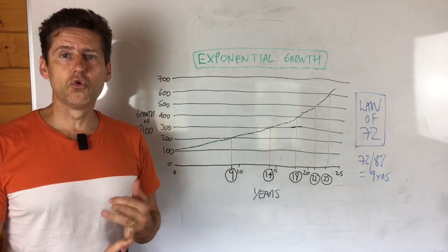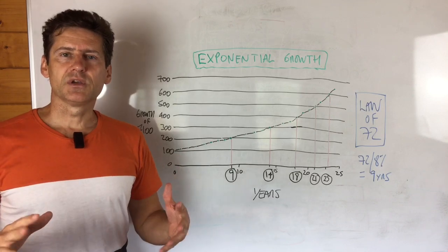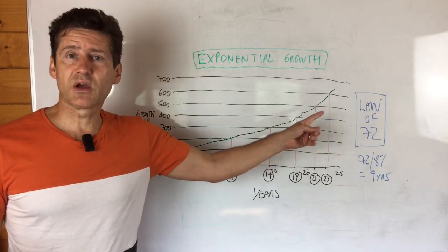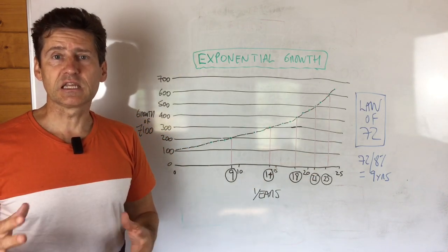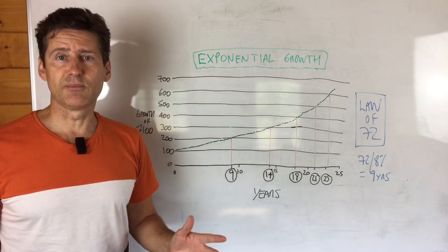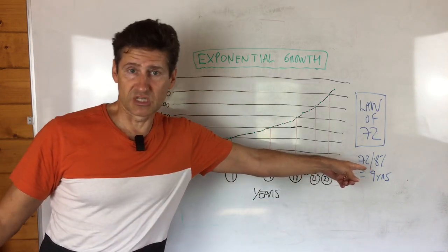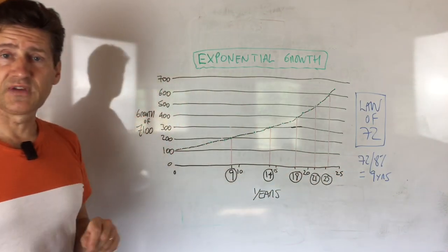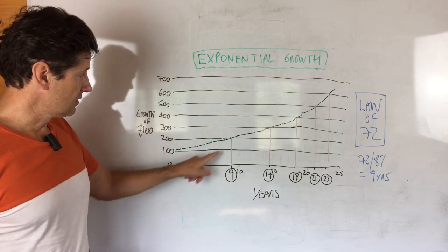The first concept I want to talk about is what's called the Rule of 72. It's a really simple rule of thumb that basically says the number 72 divided by your investment return is roughly the number of years it takes for your initial investment to double. So in this situation here, 72 divided by 8%, which is the example I'm going to use, takes about nine years for your initial investment to double. So let's have a look here: 100 pounds doubles to 200 pounds after nine years.